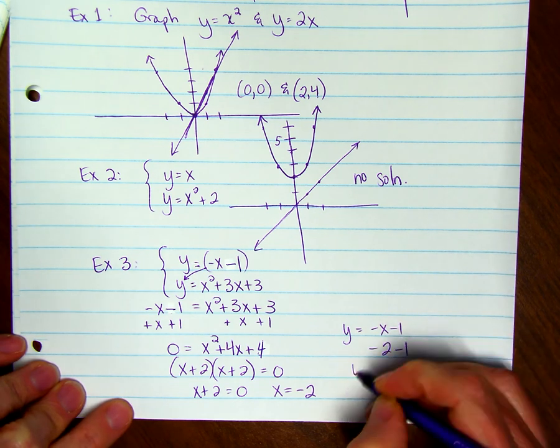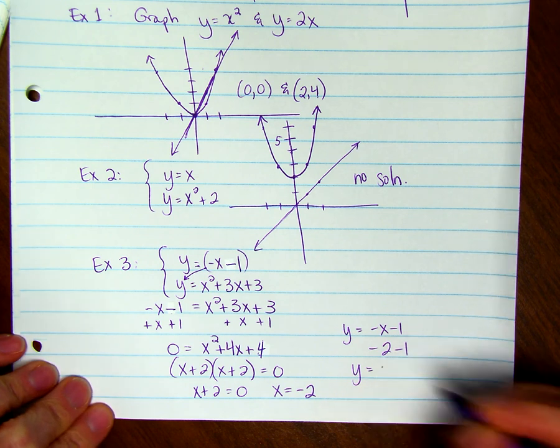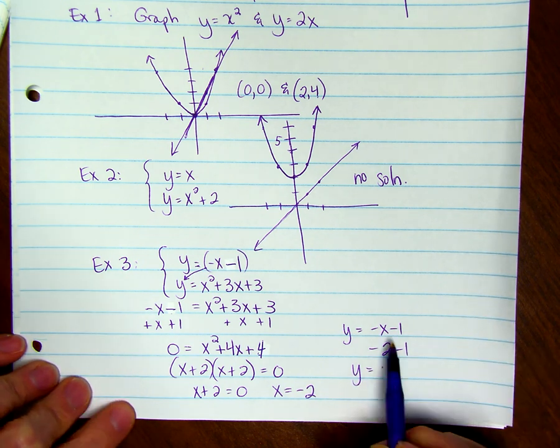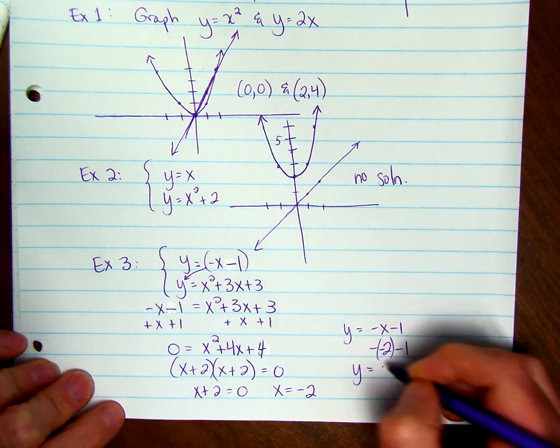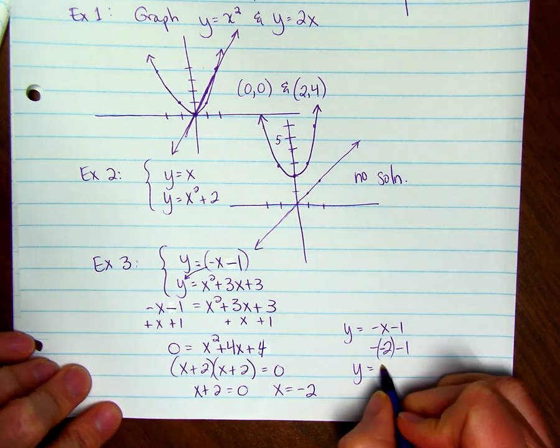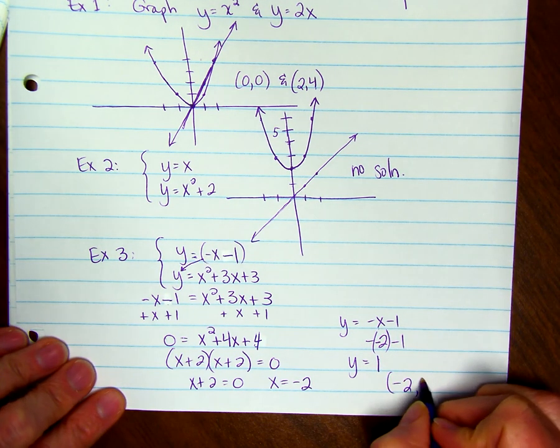So I have -2 - 1. y is going to be negative, wait a minute, it's -x. x is -2, so -(-2). That's a positive 2. Minus 1 is 1.